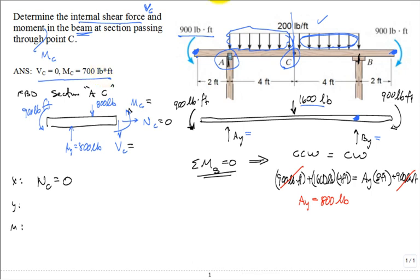So in the interest of time, from the sum of the forces in the Y, you get that V sub C is zero. Then sum of the moments around point C equal to zero - that equilibrium equation - then you can calculate that the moment at C is equal to 700 pound-foot.